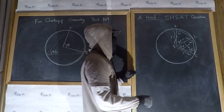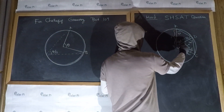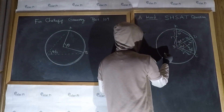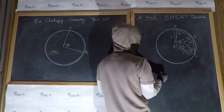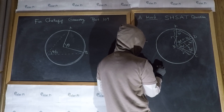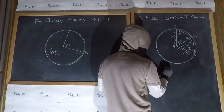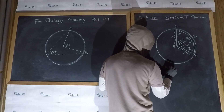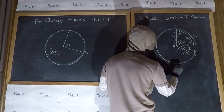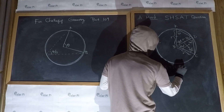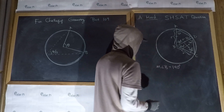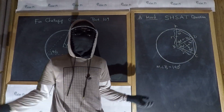And so, putting together 80 and 60, we see that the angle we're looking for — the measure of angle B — is equal to 140 degrees.